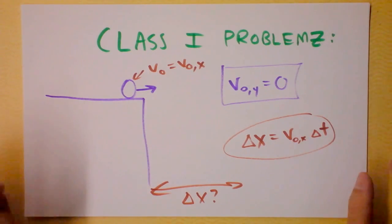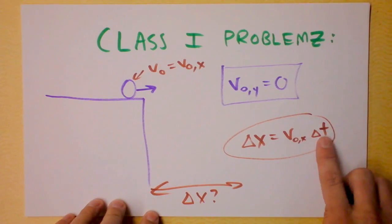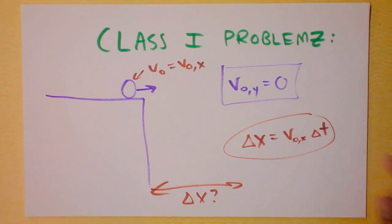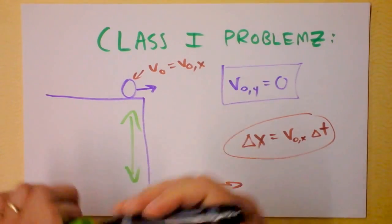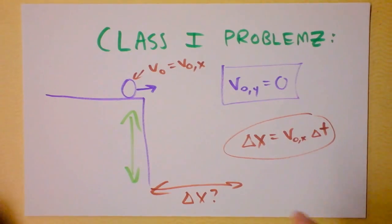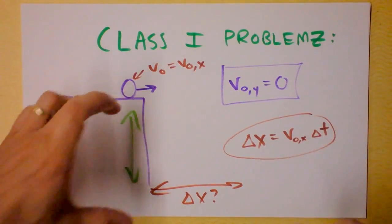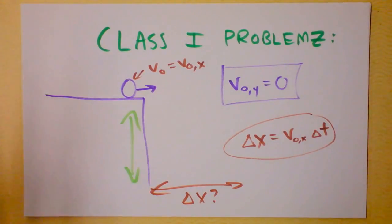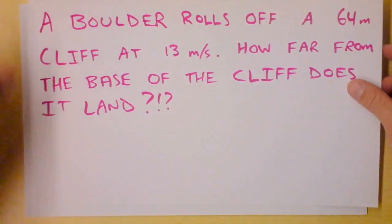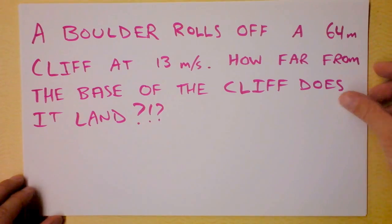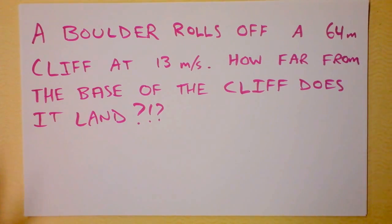These are Class 1 problems — a fine place to start. The only trick is going to be finding the time, and we'll use the y dimension, which will be given, in order to find the time. The third type of Class 1 problem would be to find that height. Now let's jump into the first problem: a boulder rolling off of a 64-meter-high cliff at 13 meters per second.